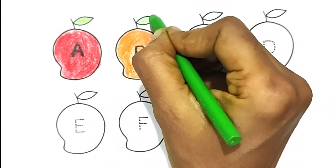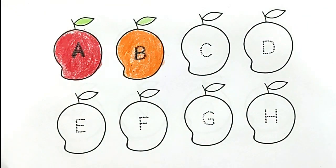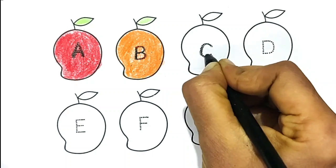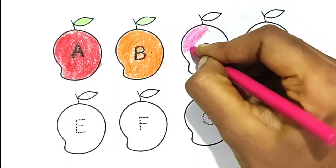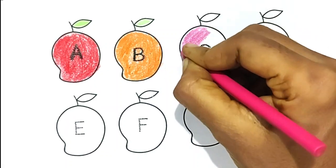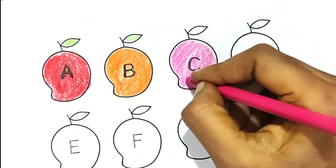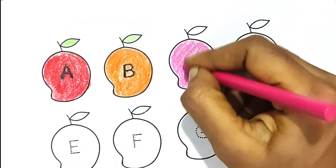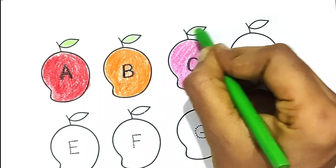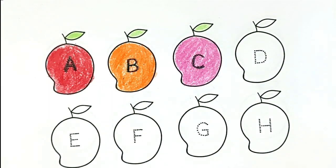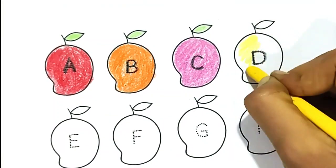Green color, black color, C pink color, C for crab. Green color, black color, D yellow color.